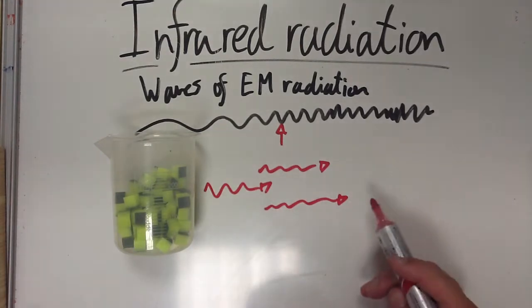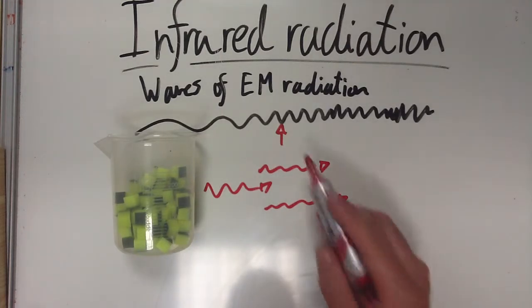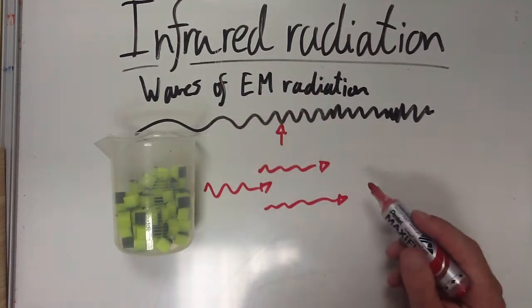Infrared radiation is emitted by all things. You, me, space, everything emits infrared radiation, but the hotter it is, the more infrared radiation it will emit.